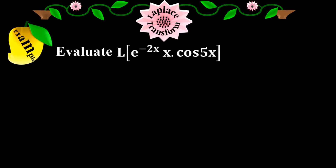Example: evaluate the Laplace of e to the minus 2x times x times cos(5x). This function is the product of three elementary functions: an exponential function, an algebraic function, and a trigonometric function. So we need to find the Laplace of the product of these three elementary functions.